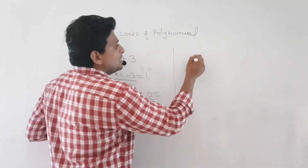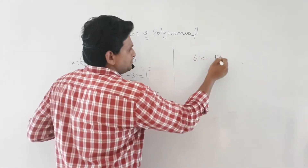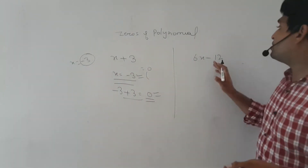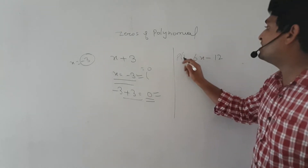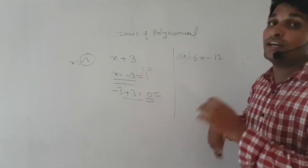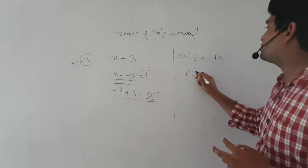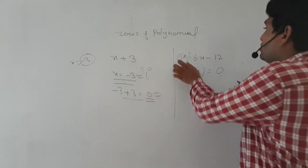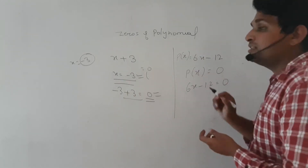I will take another example: 6x minus 12. Now, if I put a value in it, what value of x will make your expression zero? That means p(x) will become zero. So the method is: set the polynomial of x equal to zero. Write: 6x minus 12 is equal to 0.